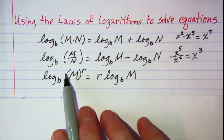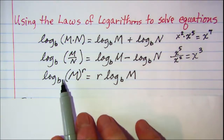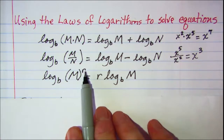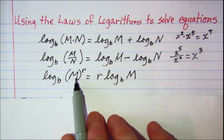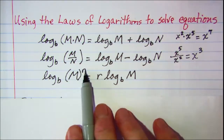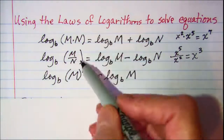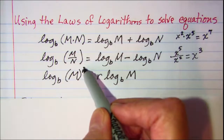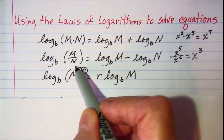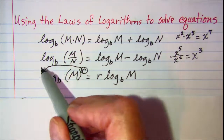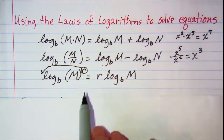The third law of logarithms: when we have a base raised to a power as our argument, the rule says we can take that exponent and put it out in front, multiplying by the logarithm. So it's r times the log of m base b.